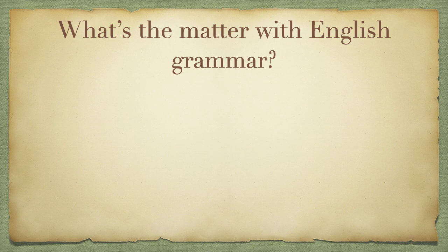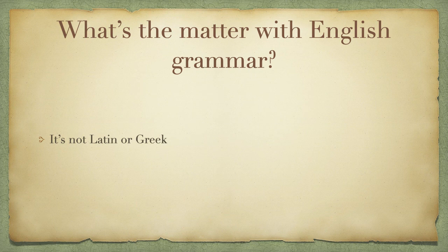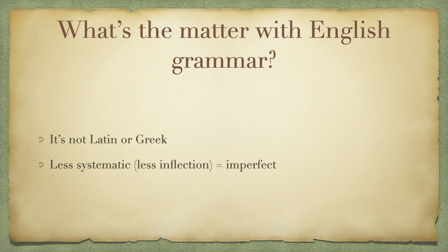Among language standardizers — the educated people of means and power who had inclinations and time to worry about the state of English — there was a common sentiment that English grammar was deficient. Part of this sense of the problem stemmed from comparing English to Latin and Greek. They looked at those languages and saw perfection, while English, in contrast, had a relative lack of systematicity and really seemed imperfect.